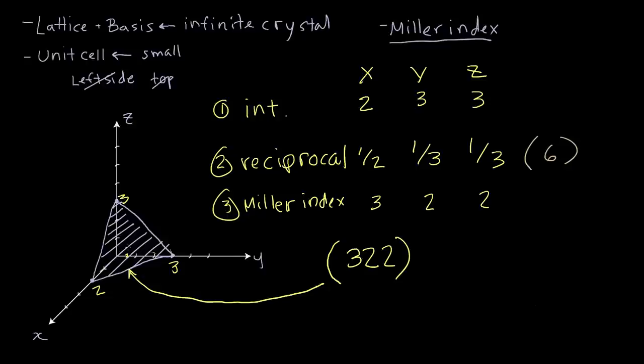So now instead of calling this the plane that intersects the axes at 2, 3, and 3, we can just call this the 3, 2, 2 plane. And anyone who has learned Miller indices will know what you're talking about. So this is a much more efficient way of working and describing crystal planes, or any planes actually, not just crystal planes.